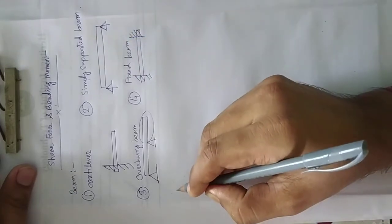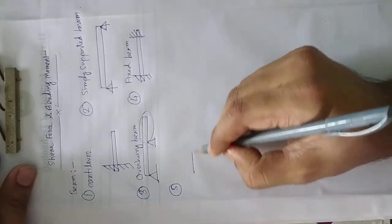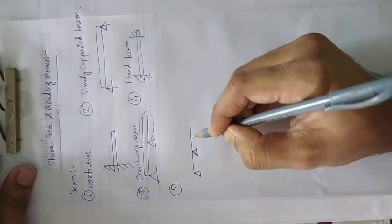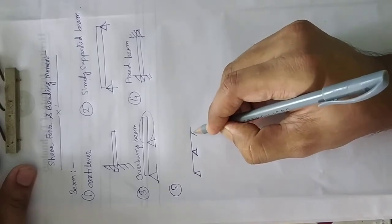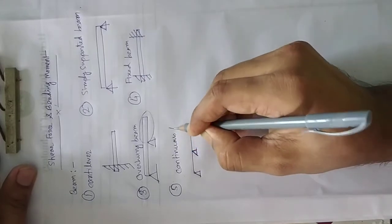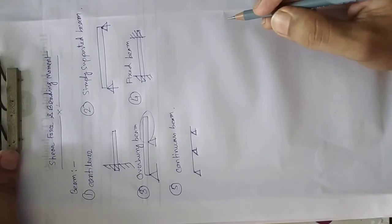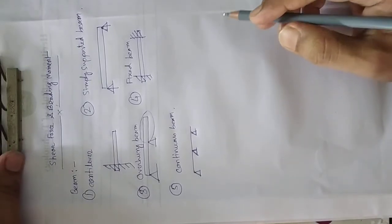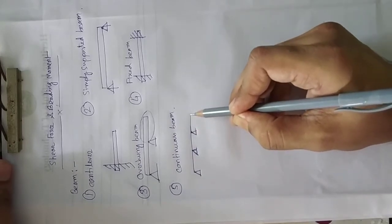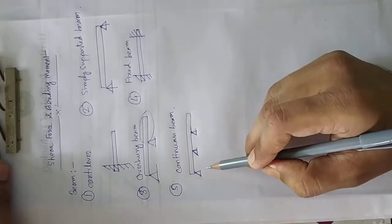And number five, this is called continuous beam. A beam which is having more than two supports is called continuous beam. So when some portion is out from the supports and there are more than two number of supports, then it is continuous beam as well as there is overhang portion.